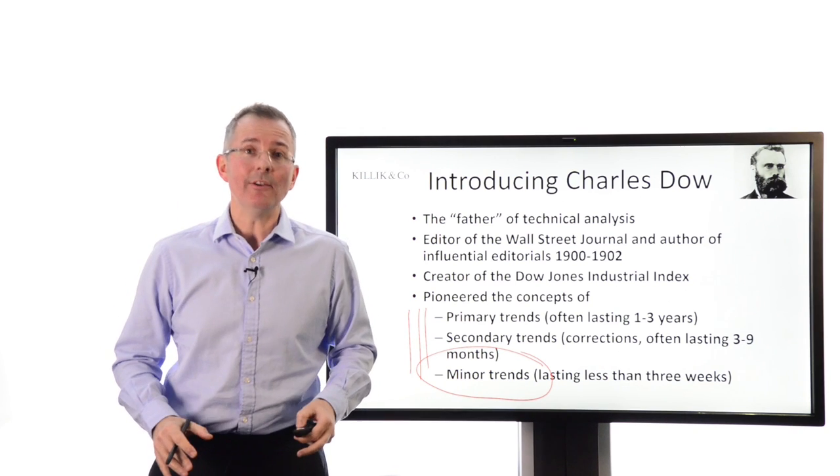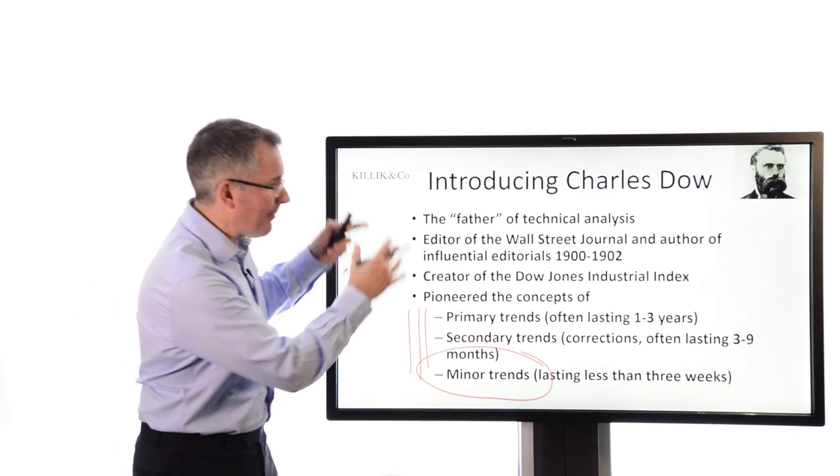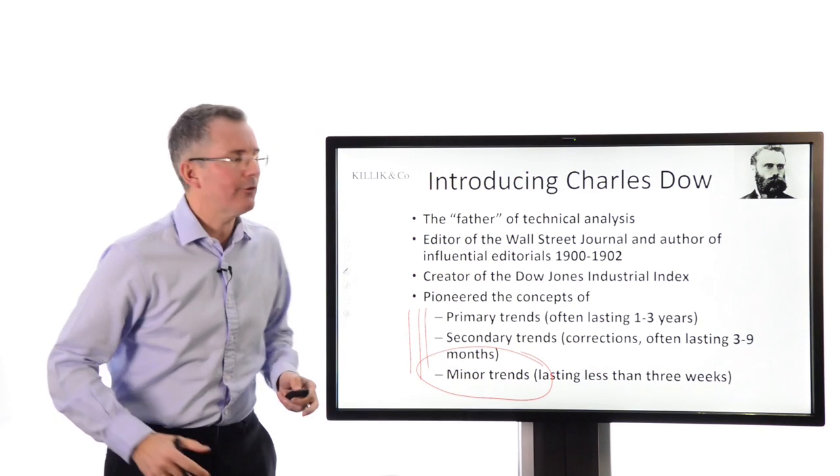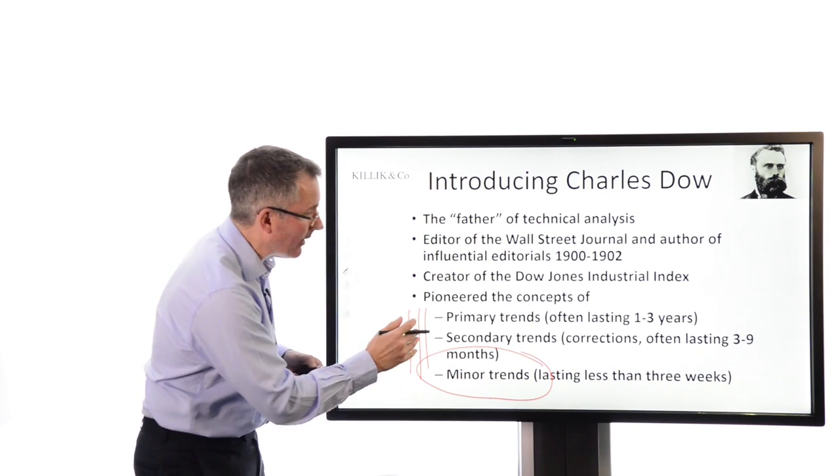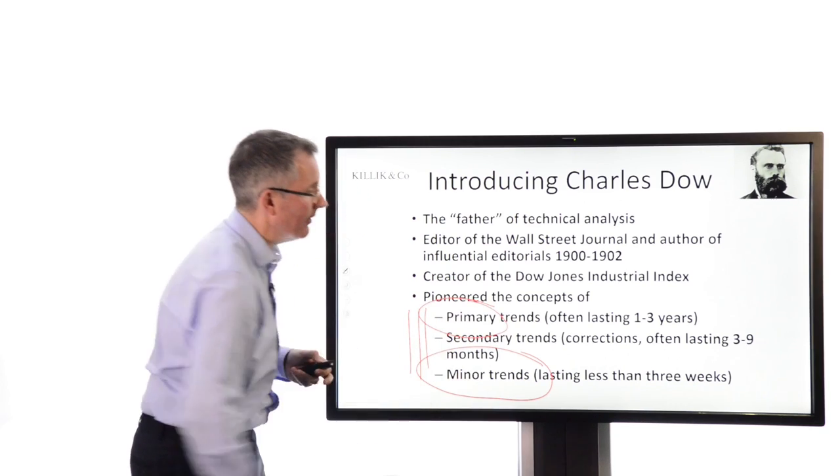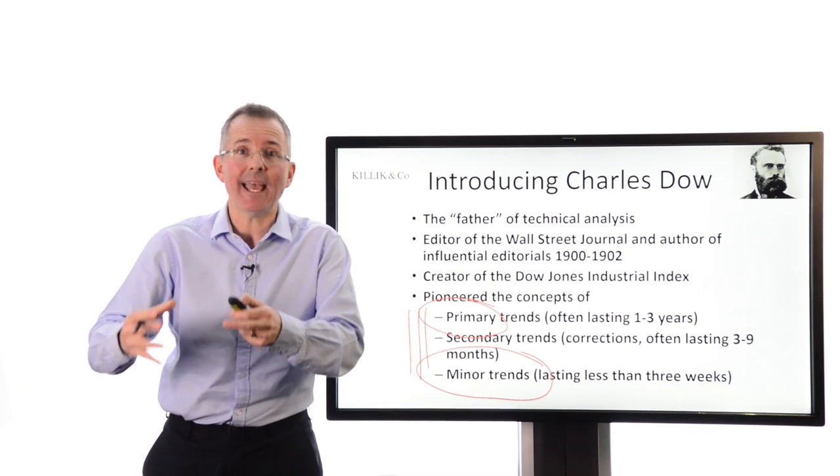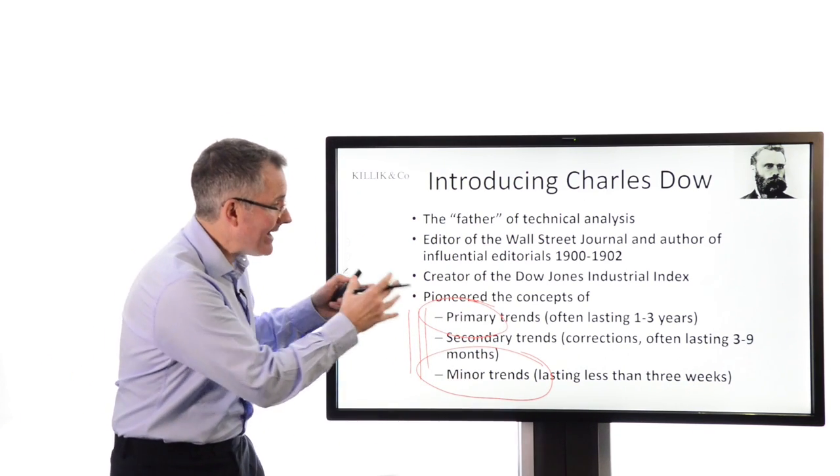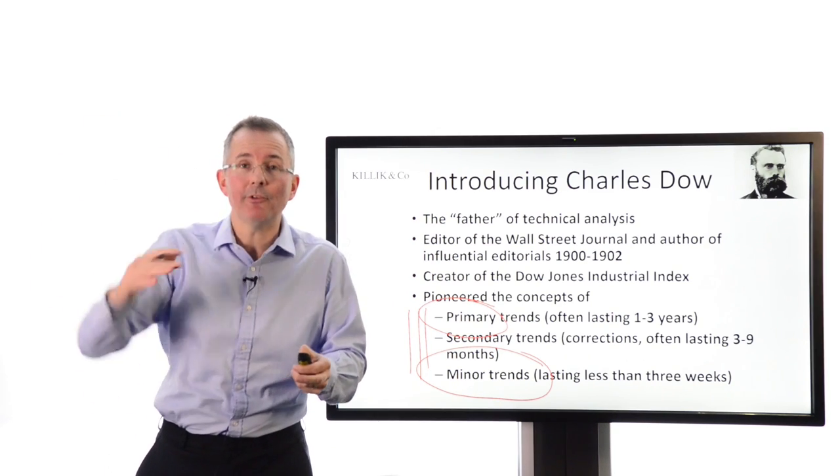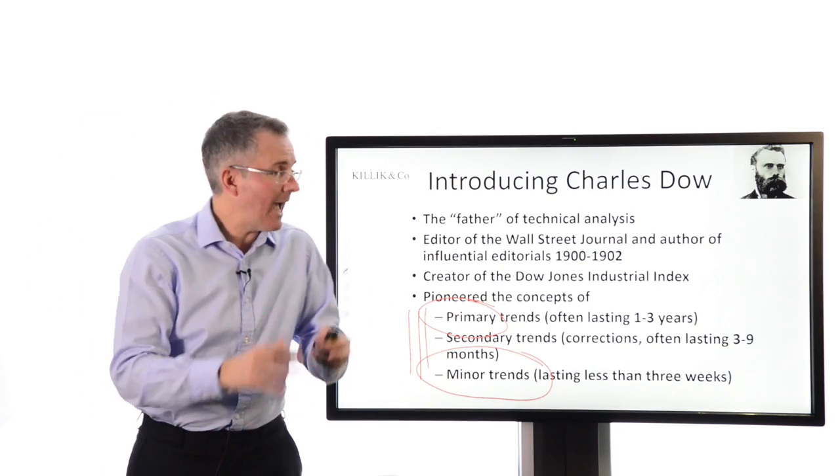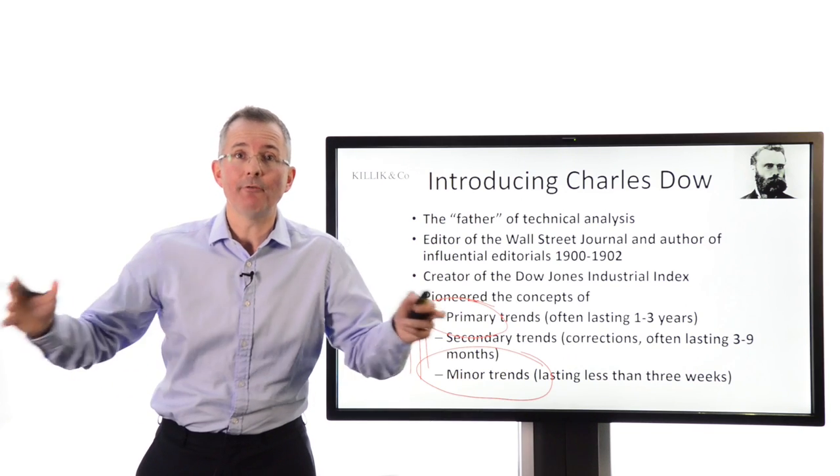Secondary trends - because markets don't move in a straight line, they tend to wobble, or if you look at a stock chart it zigzags, doesn't just go up in a smooth line. Secondary trends: little corrections, little pullbacks, little reversals, little changes of direction, but they leave the primary trend intact. And then you get the noise - the stuff you want to ignore, the stuff that doesn't last very long.